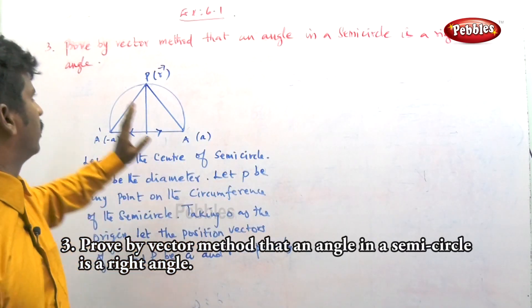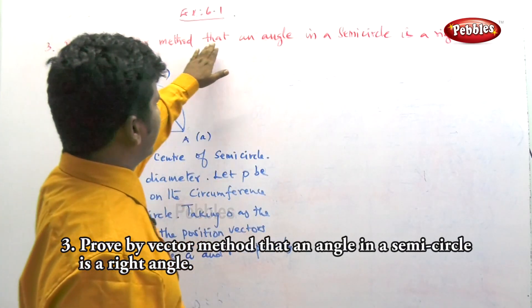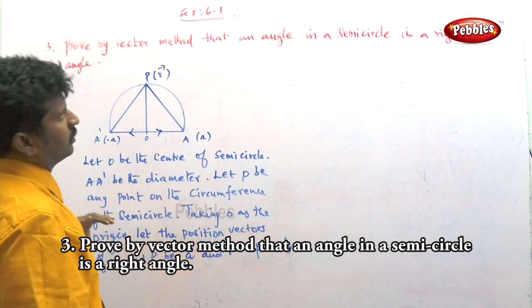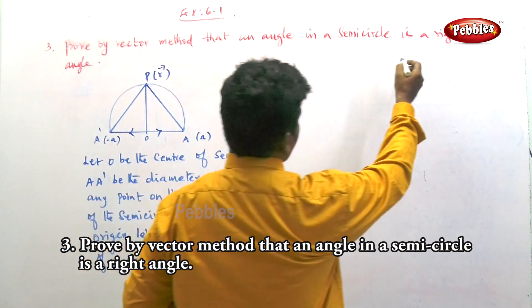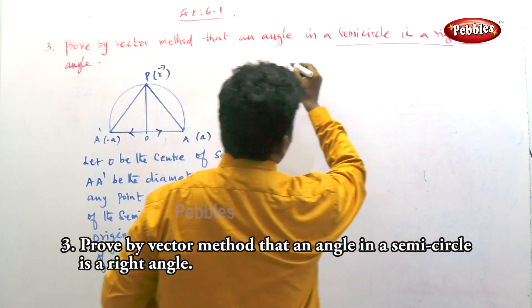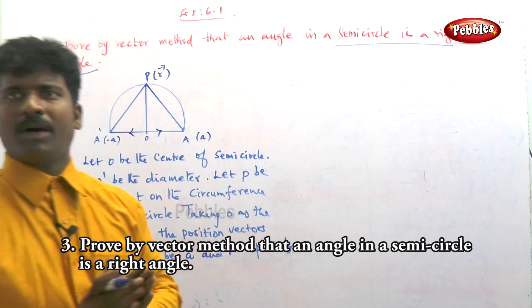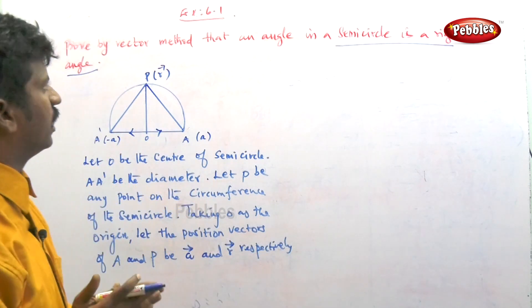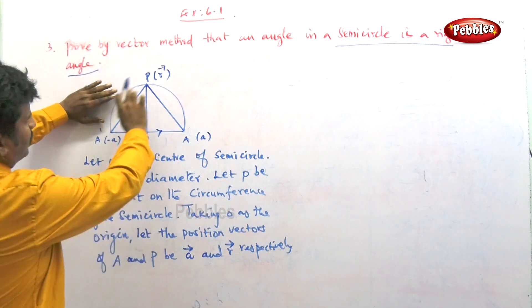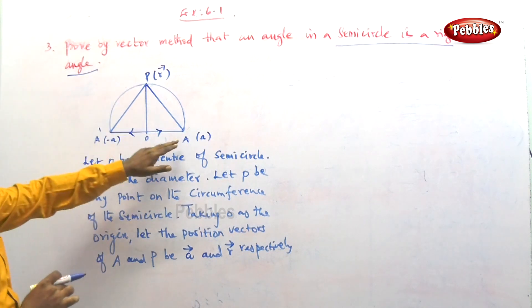We will prove the third question using the vector method: that an angle in a semicircle is a right angle.